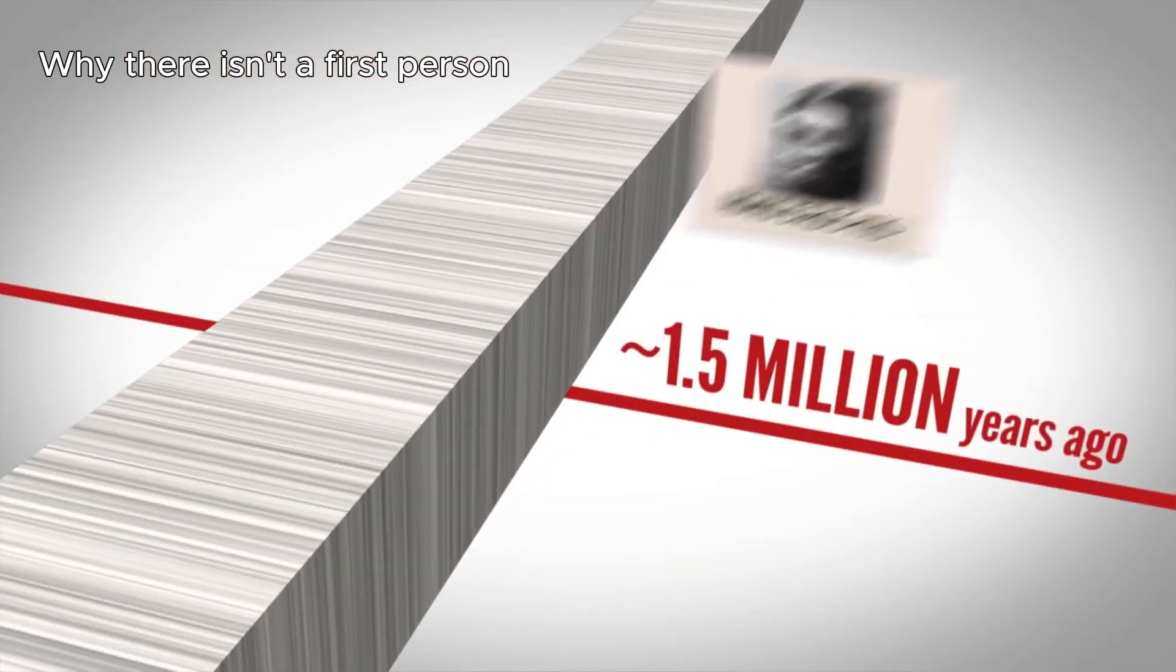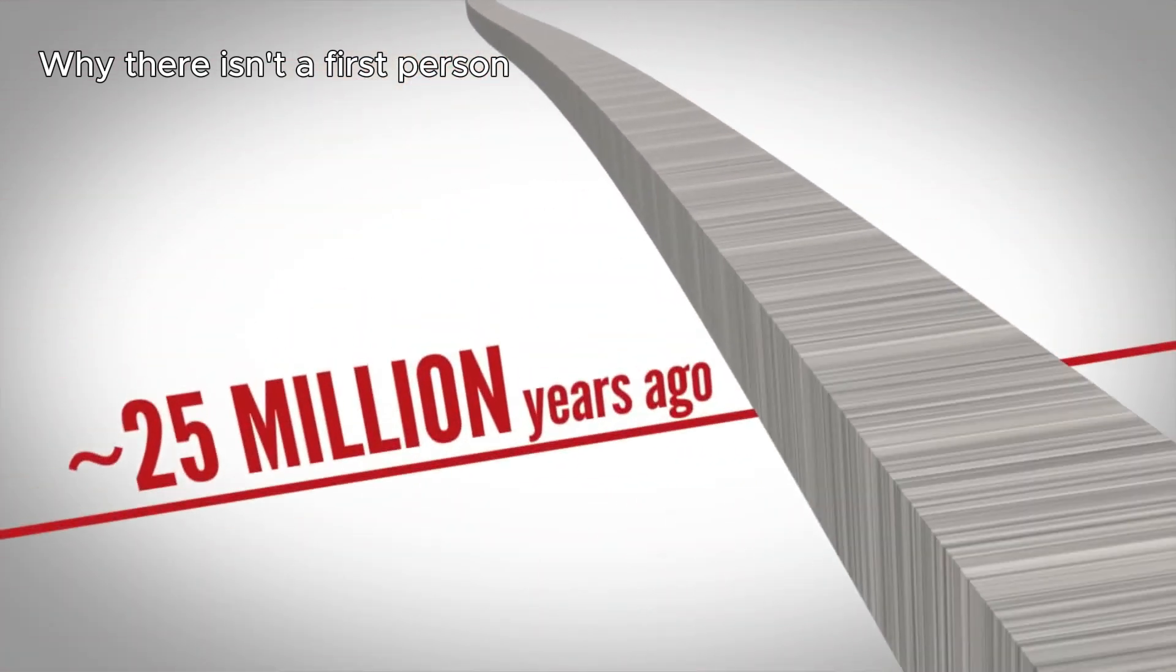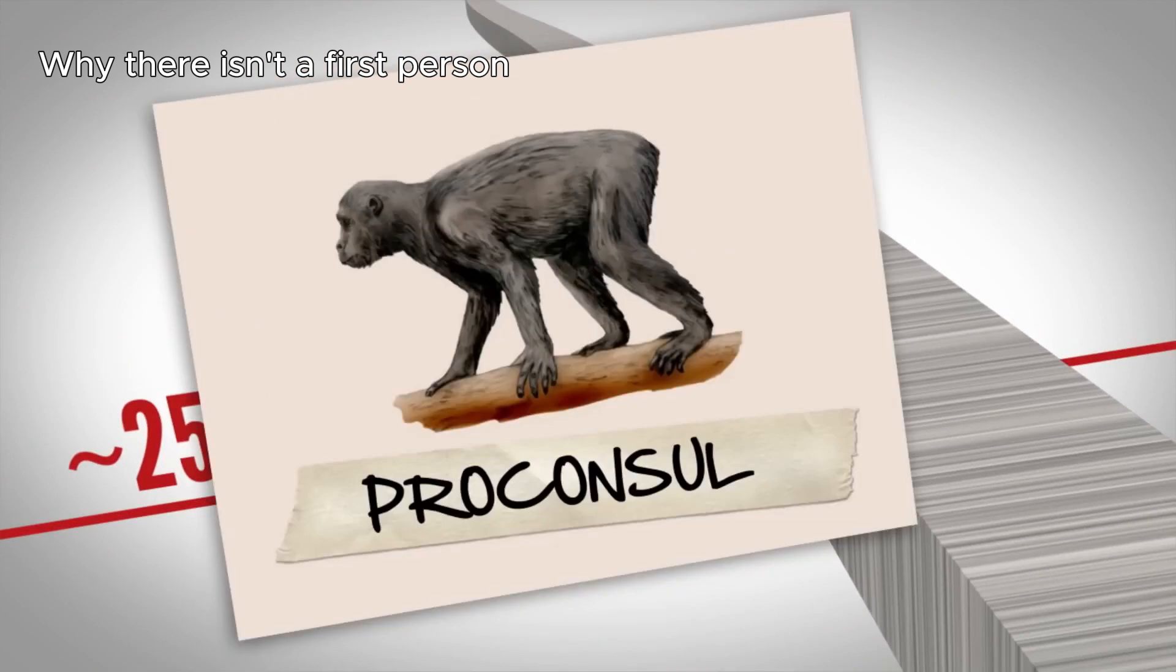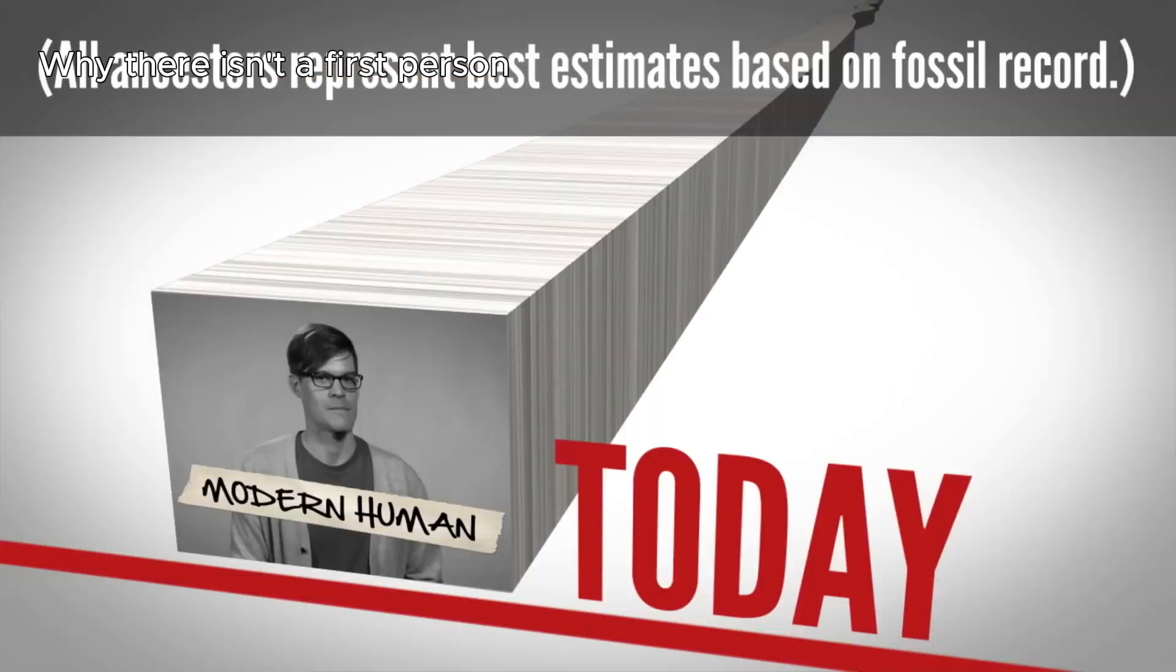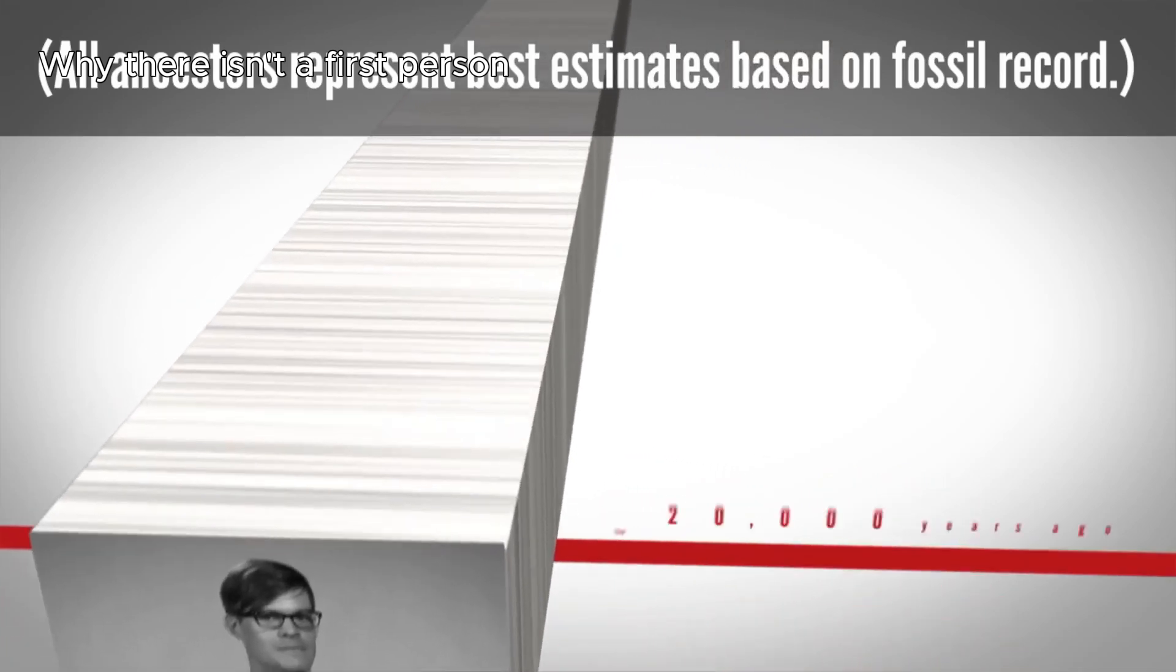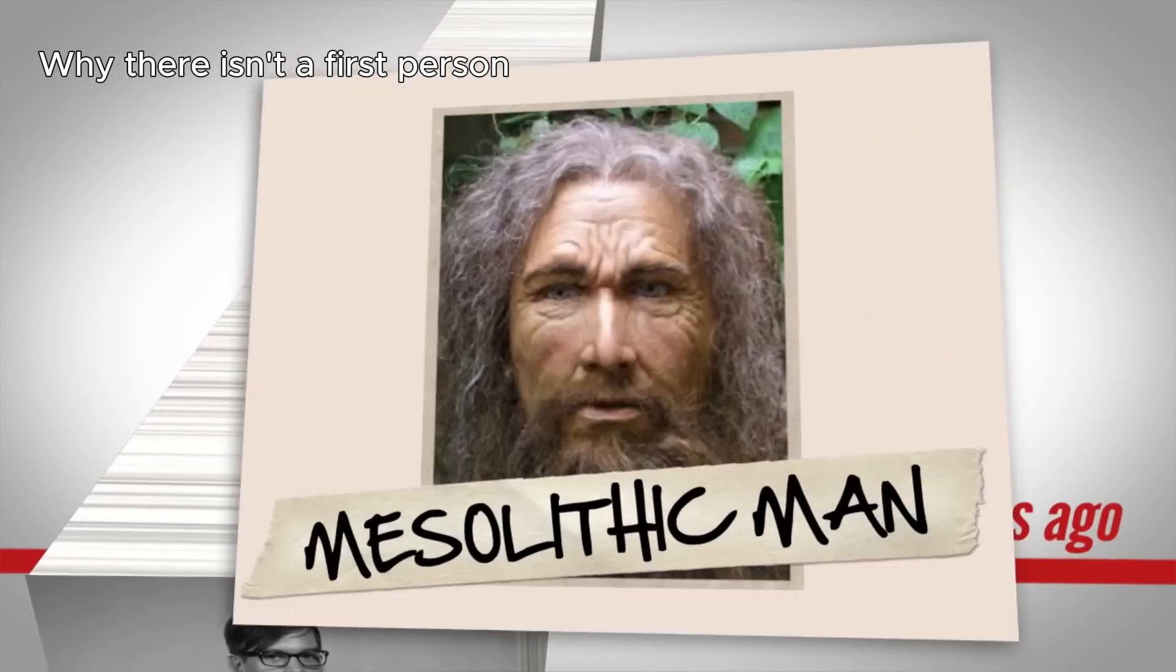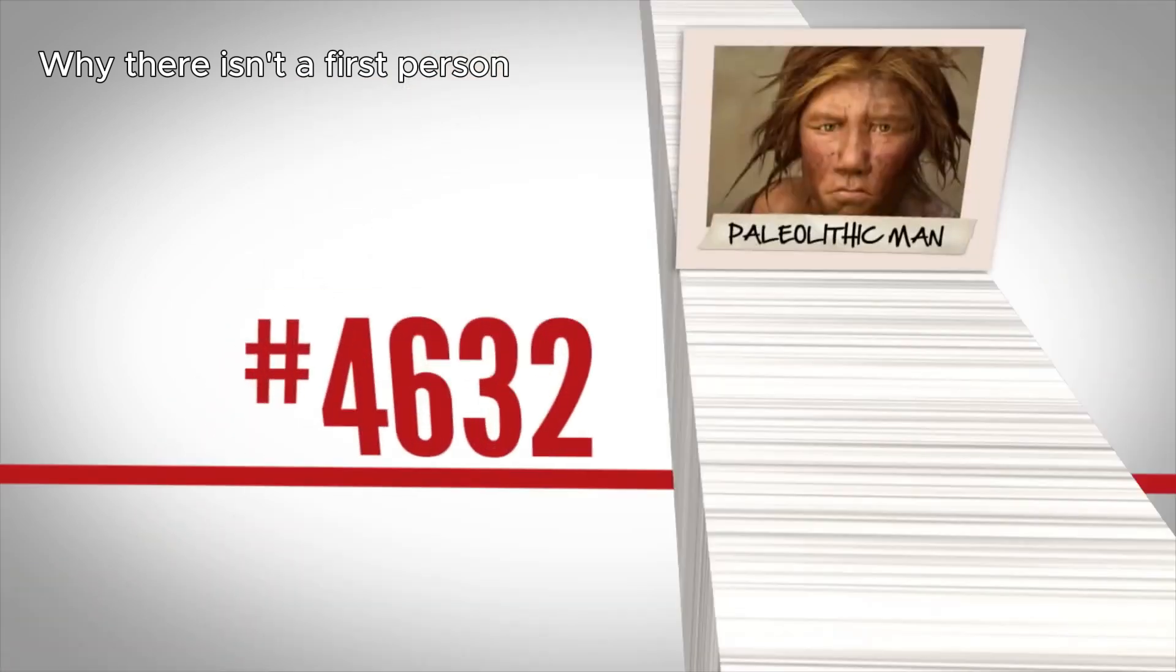There was no first person because evolution happens on a very gradual basis and collectively on a generational basis. If we pluck a photo from the stack a thousand years ago, we find a homo sapiens still, but they were slightly different from us today. You have to pluck a photo from way further back to see larger differences.